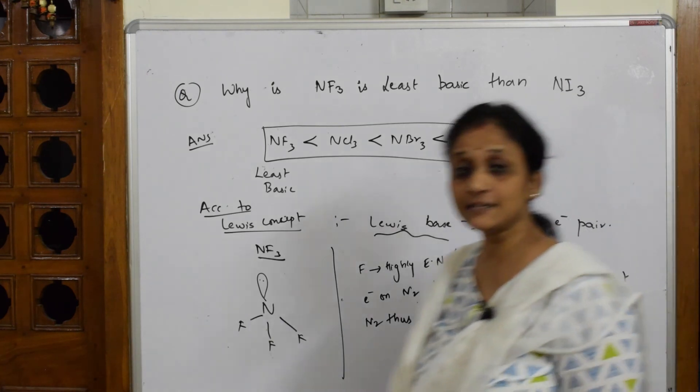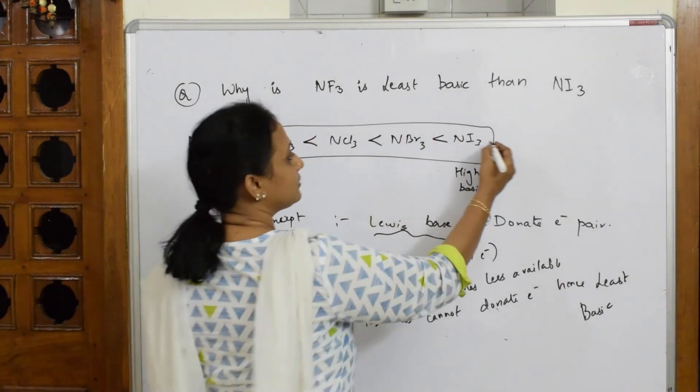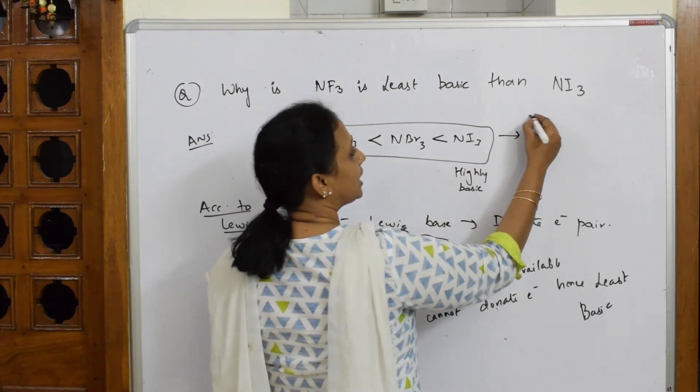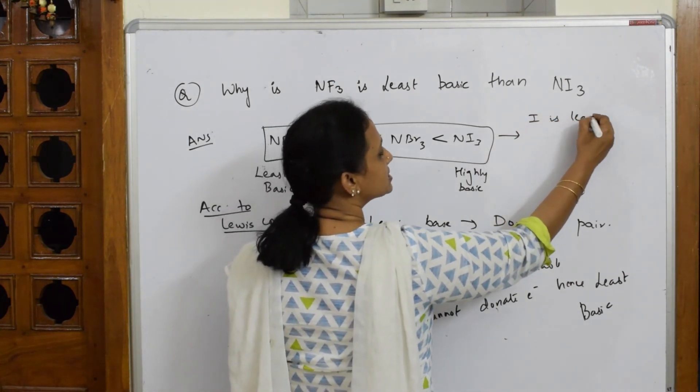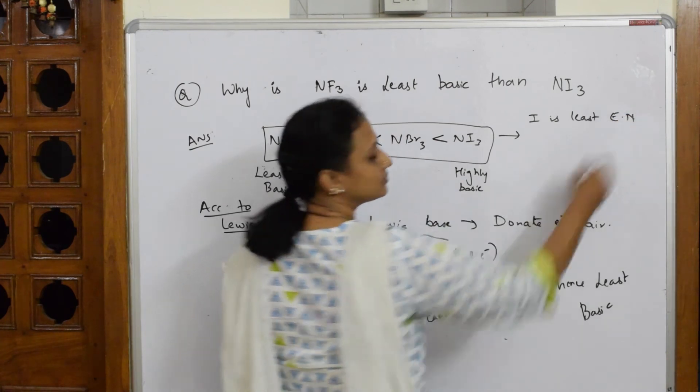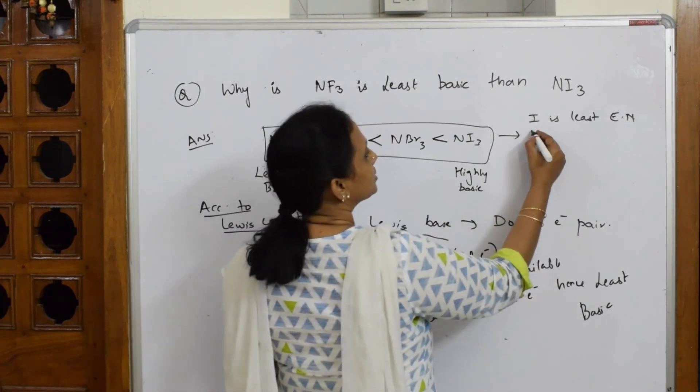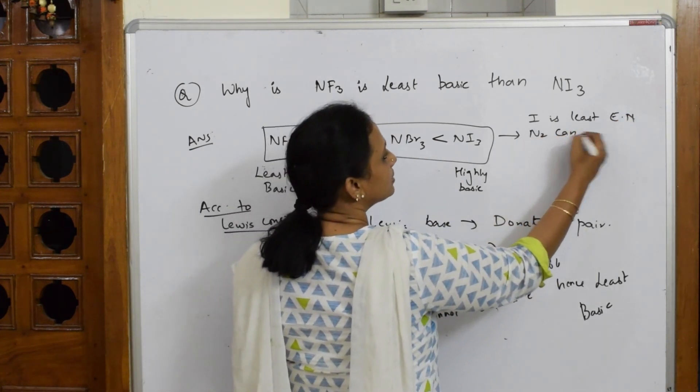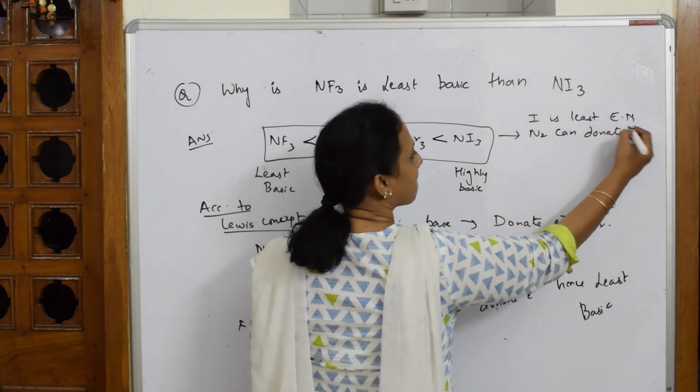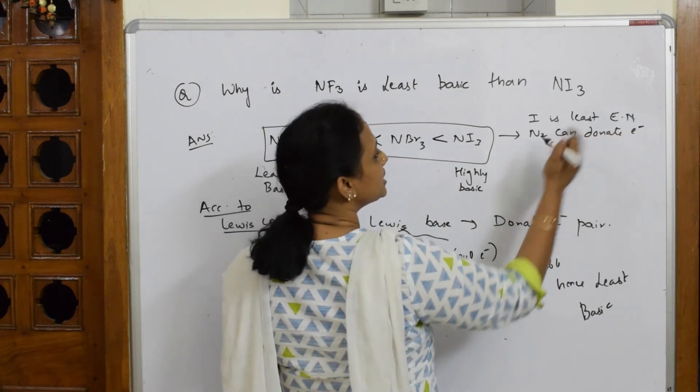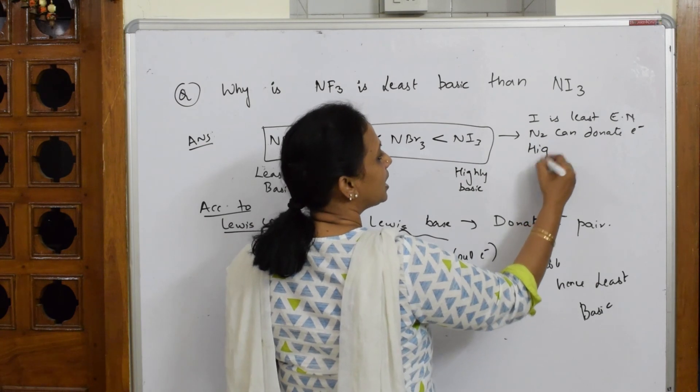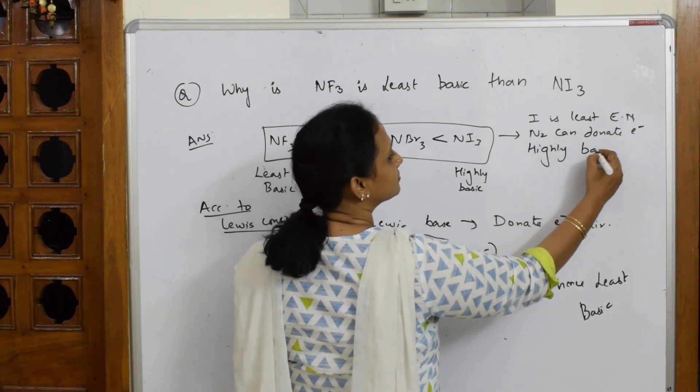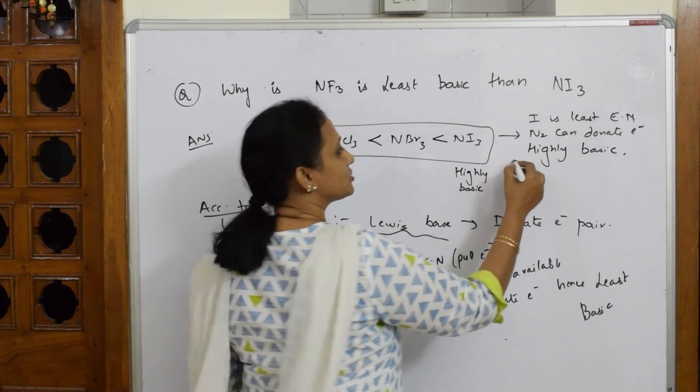But in case of NI3, what is the story? In case of NI3, if I have to write, iodine is least electronegative. So nitrogen can donate electrons easily. When something donates electrons, it is highly basic.